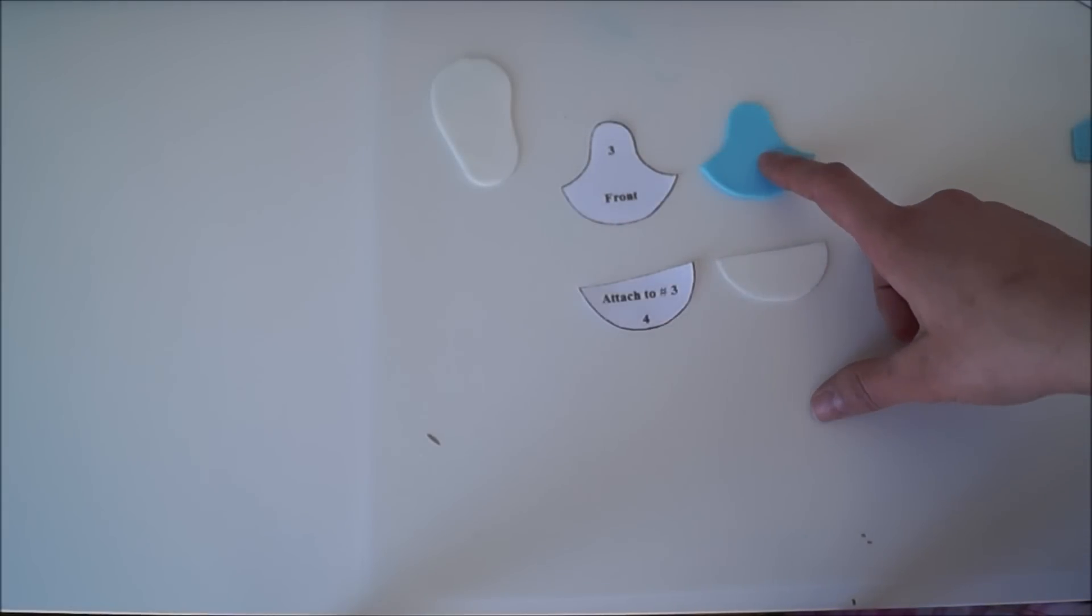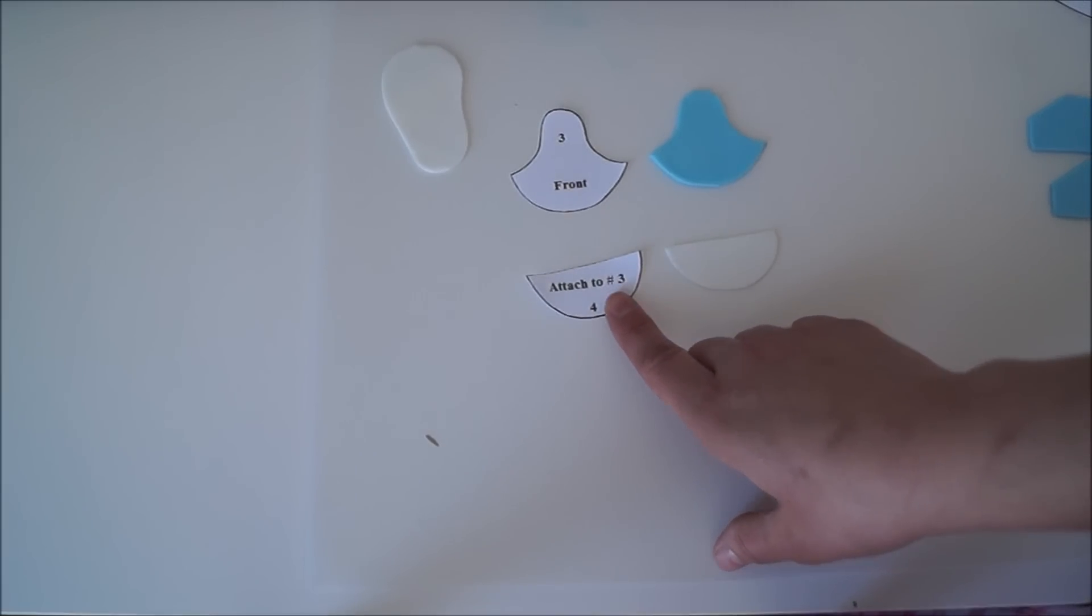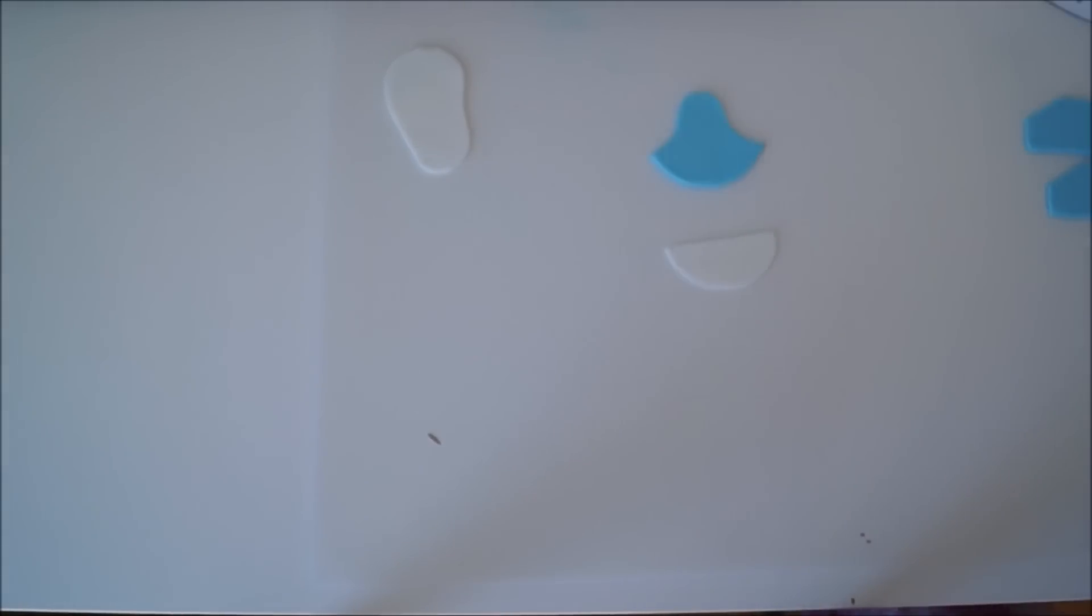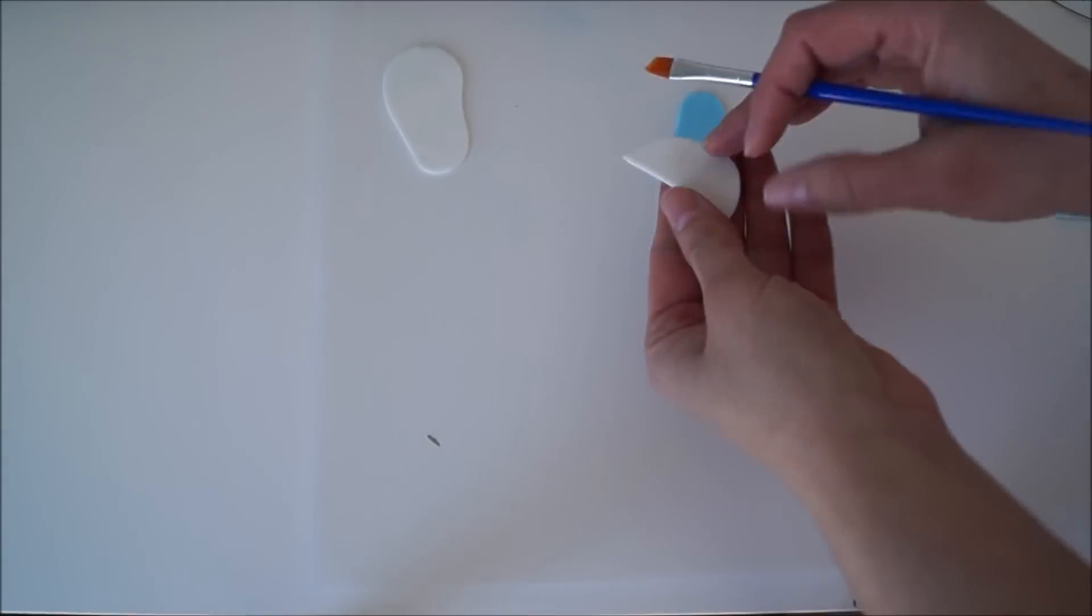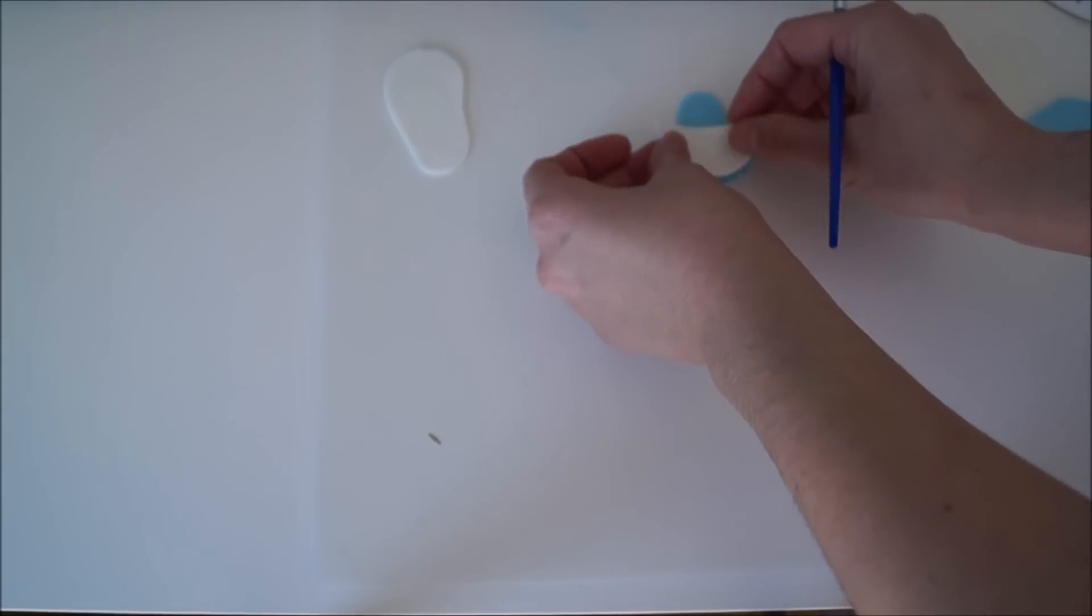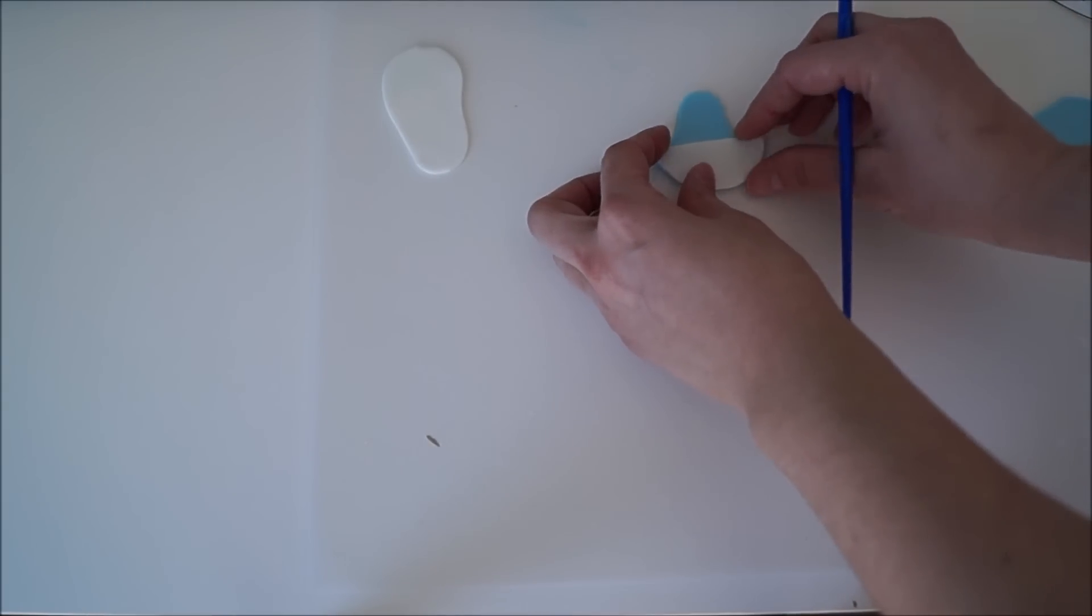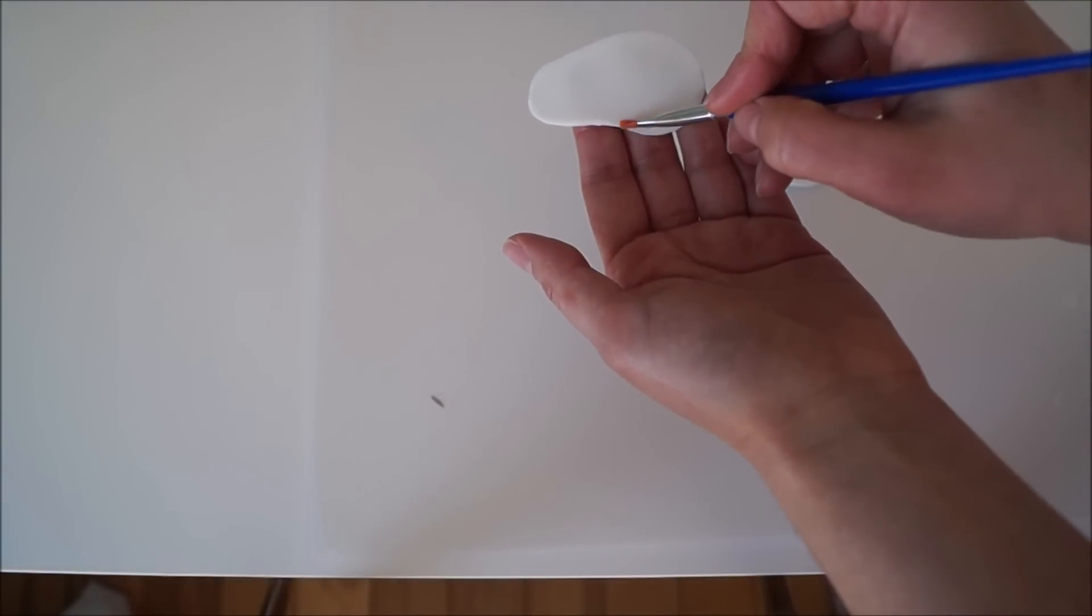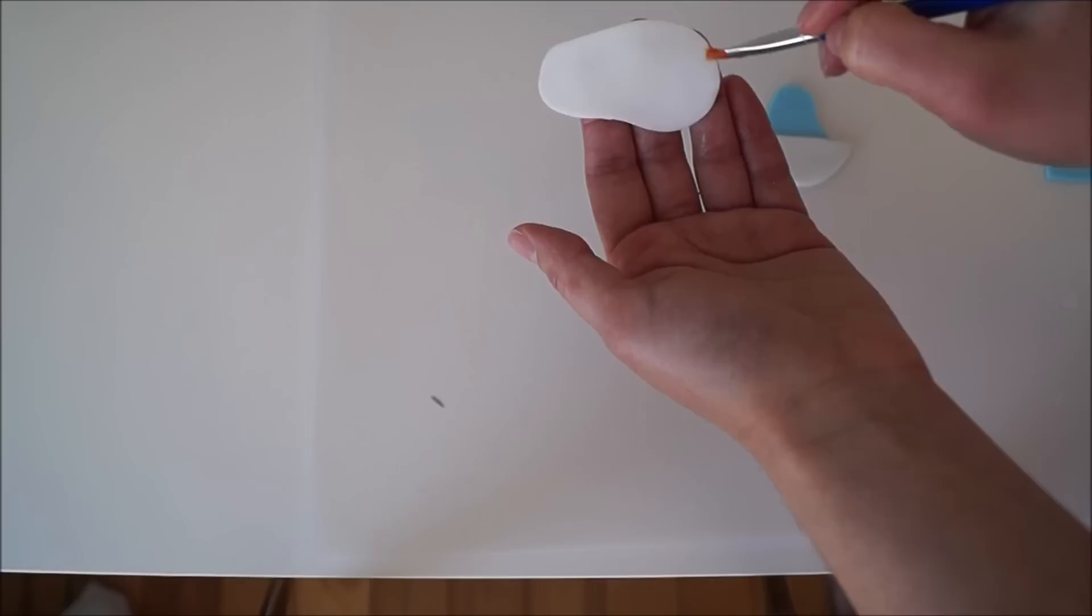Roll out and cut number three in a different color, and cut number four in the white color. Using a little bit of water, take the white fondant, brush some water, and glue it to your sole. Then brush the front part with water.